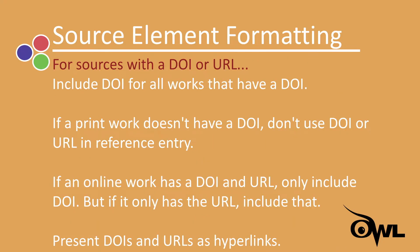When including a source with a DOI or URL, follow these guidelines. Include a DOI for all works that have a DOI, regardless of whether you use the online or print version. If a print work does not contain a DOI, do not include a DOI or URL in your reference entry. If an online work has both a DOI and URL, include only the DOI. If an online work has a URL but no DOI, include the URL in your reference.